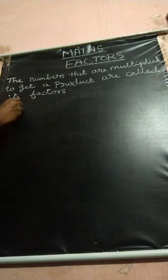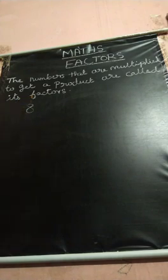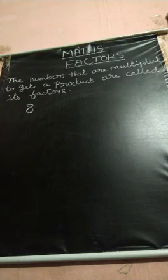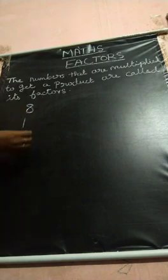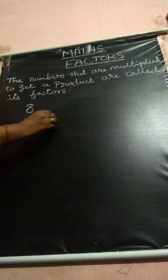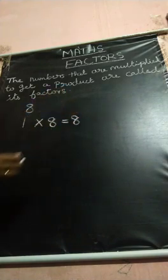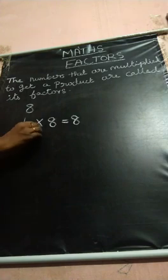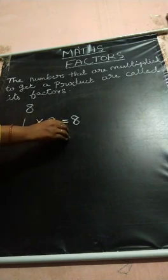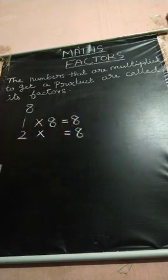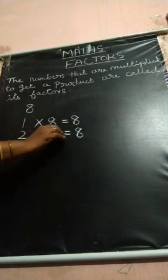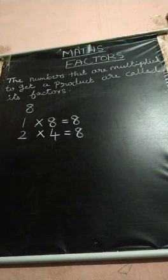For example, you are taking 8. Now we are going to find out the factors. You start from 1. 1, 8s are 8. Next, 2 table — when will 8 come? 2, 4s are 8.